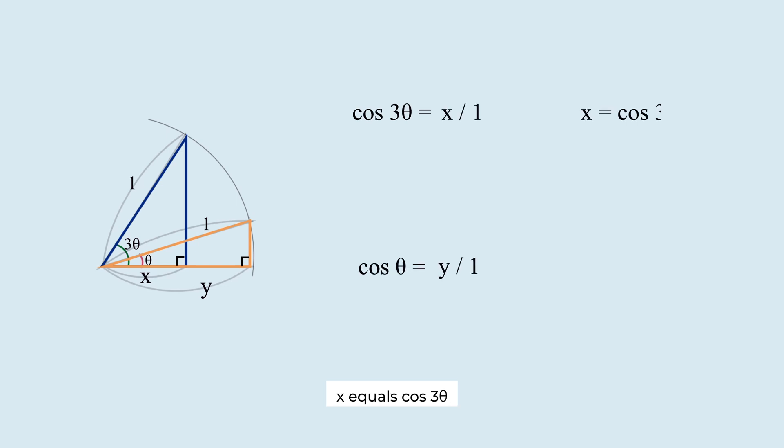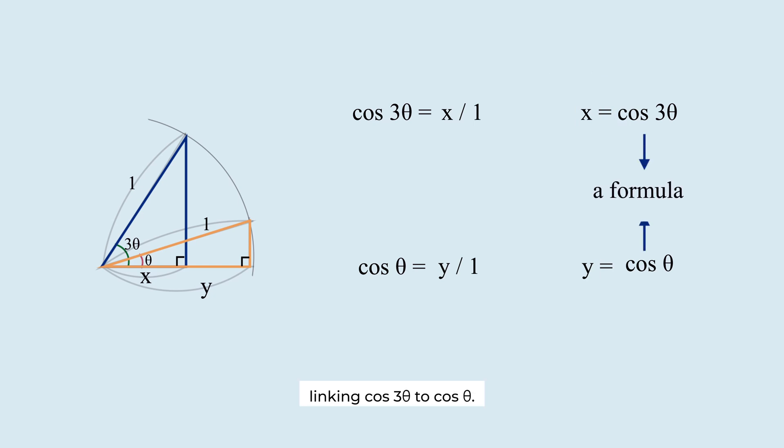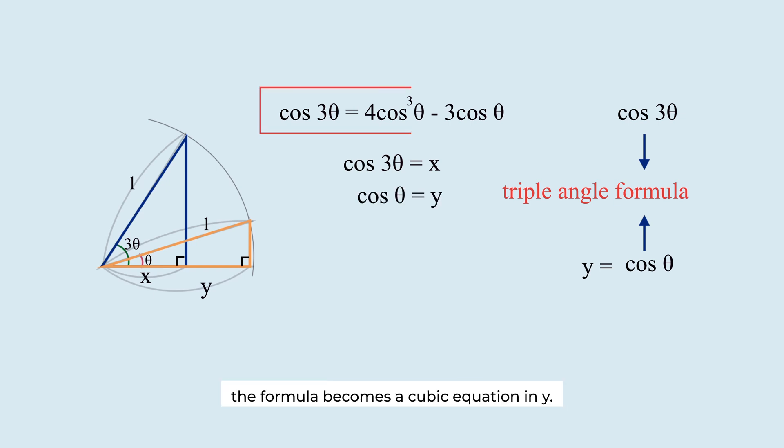x equals cosine 3 theta and y equals cosine theta. We are expressing the length with algebra. Fortunately, there is a special formula linking cosine 3 theta to cosine theta. The triple angle formula. Substitute cosine 3 theta with x and cosine theta with y. The formula becomes a cubic equation in y.